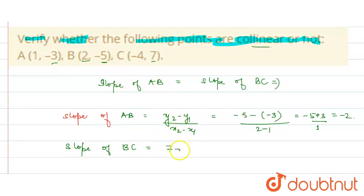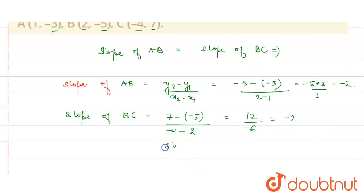That is 7 minus minus 5 upon X2, that is minus 4, minus X1, that is 2. So 7 plus 5 equals 12, and here minus 6. That simplifies to minus 2. Therefore, slope of AB equals slope of BC.